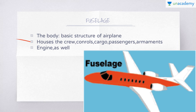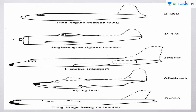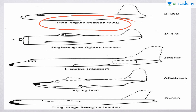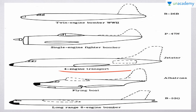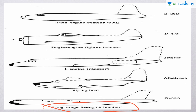The fuselage carries armaments of various sorts if required, particularly in military aircraft. In addition, an engine may be housed in the fuselage. Since many large components are attached to it, it is generally streamlined as much as possible to reduce drag. Designs vary with the mission to be performed and variations are basically endless. A few examples shown here include the B-26B twin-engine bomber of WW2, the P-47N single-engine fighter-bomber, the Jetstar four-engine transport, the Albatross flying boat, and the B-52G long-range eight-engine bomber.